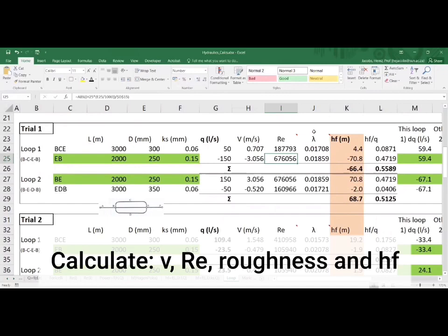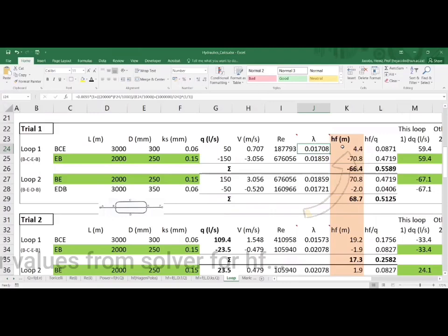Calculate values for velocity in meters per second, the Reynolds number and lambda, the pipe roughness, and then HF.